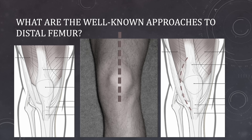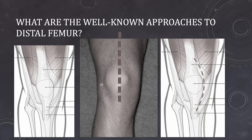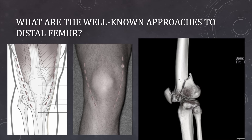Either the lateral parapatellar approach or the medial parapatellar approach can be used. The problem with this approach, however, is that we are going to split the muscle into two halves, which reduces the functional capacity of the muscle during rehabilitation. Another alternative to the midline parapatellar approach is the dual approach, in which we go on the medial side and lateral side of the patella to expose both the lateral condyle and medial condyle of the distal femur. However, it hinders the view of the trochlea, while the continuity of the muscle is maintained.